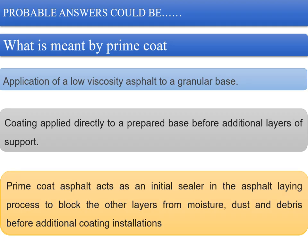A prime coat is an application of a low viscosity asphalt to a granular base in preparation for an initial layer or surface course layers of asphalt. It is a coating applied directly to the prepared base before additional layers. The prime coat acts as an initial sealer in the asphalt laying process, blocking other layers from moisture, dust, and debris before additional coating installations.